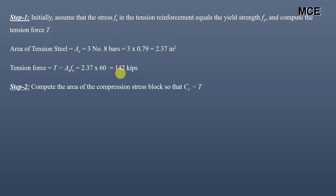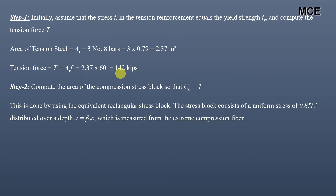The next step is to find the area of the compression stress block such that the compression force equals the tension force. This is done using the equivalent rectangular stress block, which consists of a uniform stress of 0.85f'c distributed over a depth 'a', equal to β₁c, where c is the depth of the neutral axis measured from the extreme compression fiber.